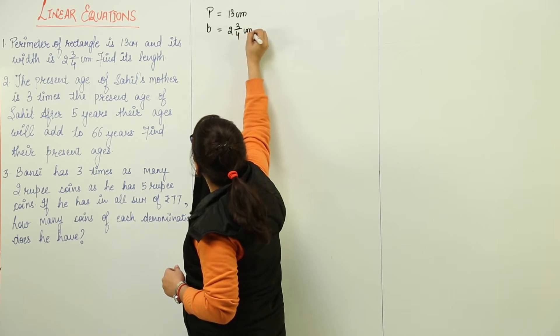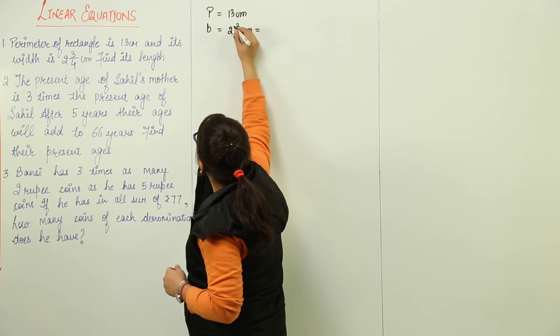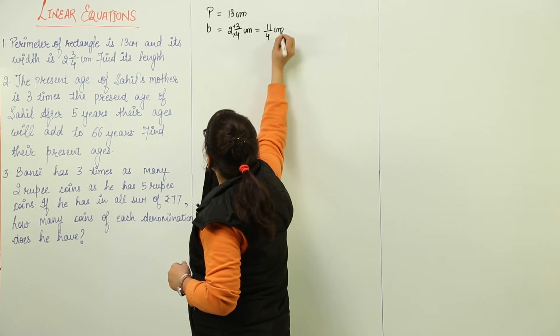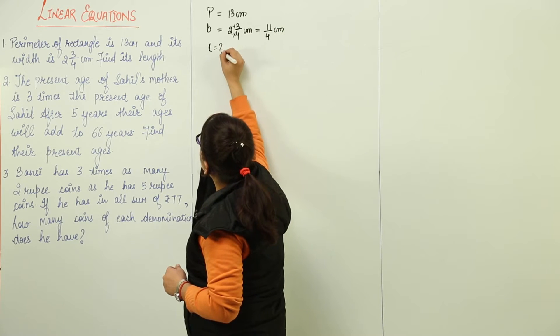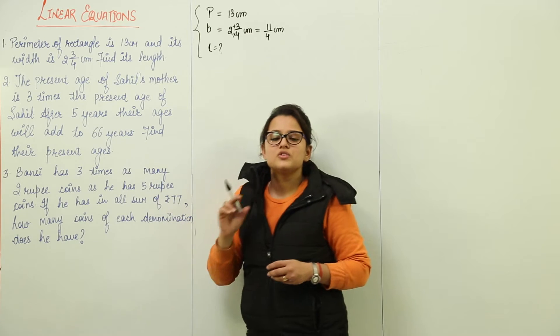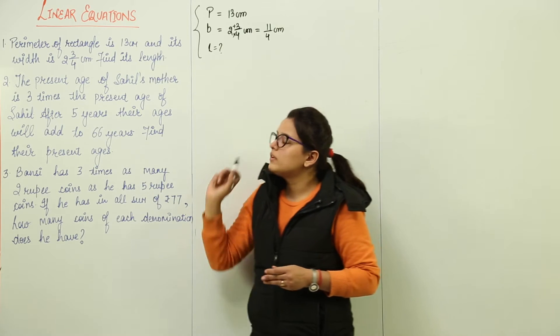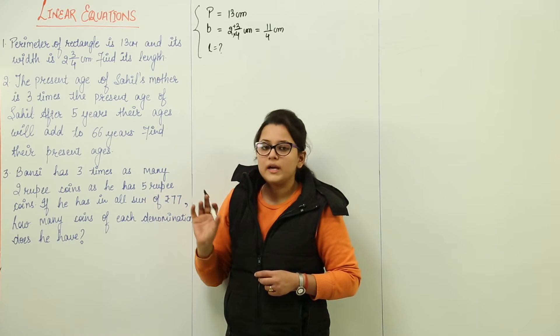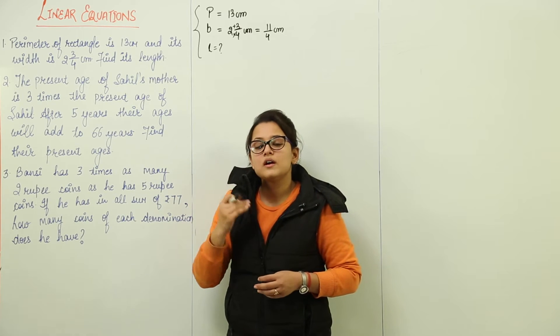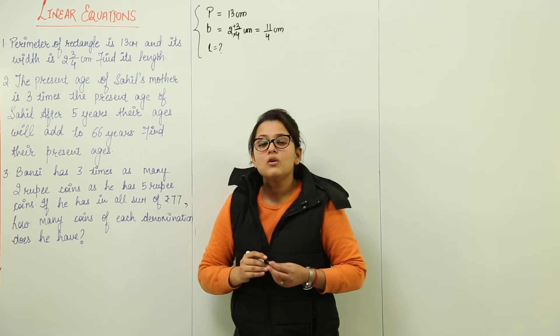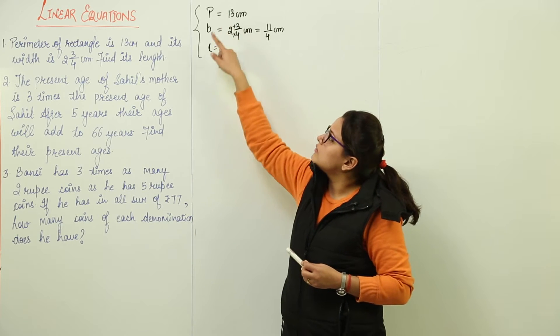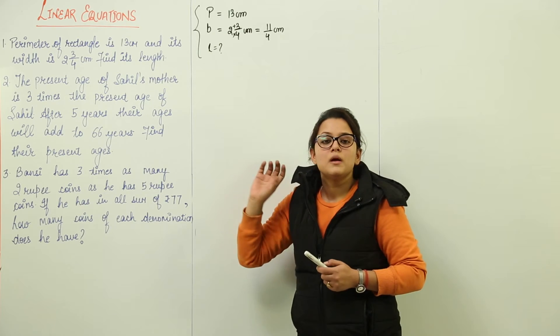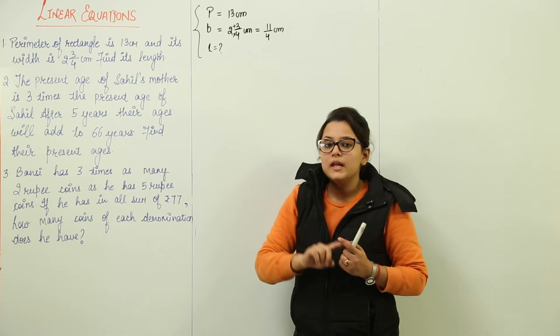I can simplify this and write 2 into 4 is 8, 8 plus 3 is 11 over 4. Now we need to find its length. Just focus what is given in the question. They are asking perimeter of rectangle provided with breadth, they are asking about the length. Just consider these three quantities. What comes into your mind when you see these three quantities? Perimeter of rectangle, length and breadth.